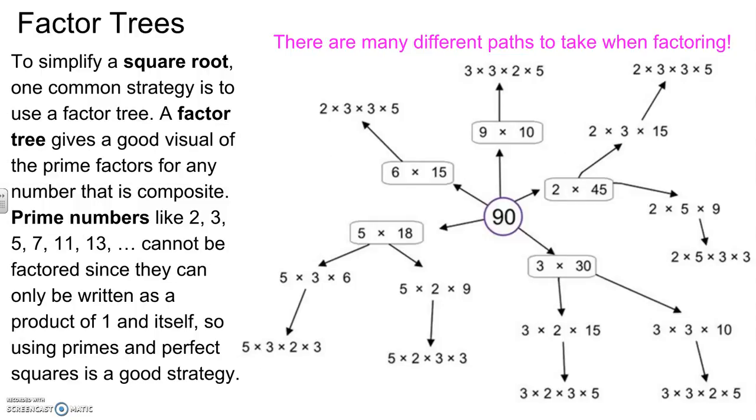Here's a good example. If I factored out 90, I could go all these different paths. I could go 9 times 10, but 9 factors down to 3 times 3 and 10 to 2 times 5.